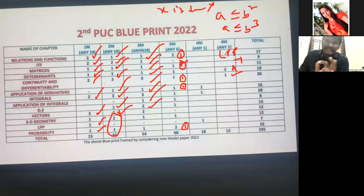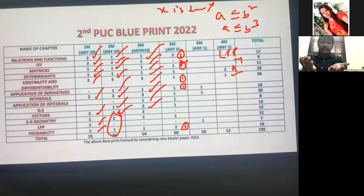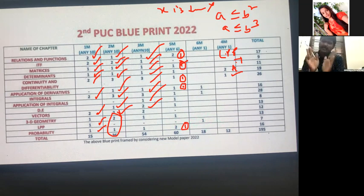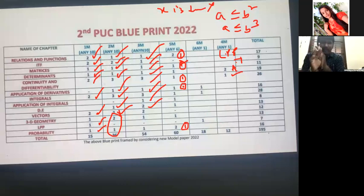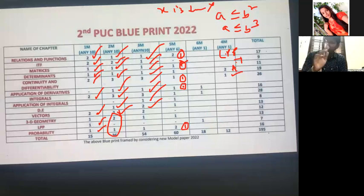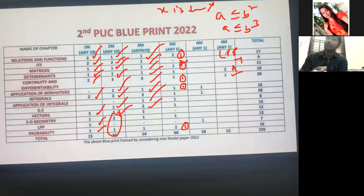For Probability three-mark questions: compulsory Bayes' theorem question — go through the example questions in Probability. Many colleges cannot cover Probability completely due to time, so teachers teach example questions, and they may ask those example questions. Go through the example questions in Probability — compulsory for both three-mark and five-mark questions.